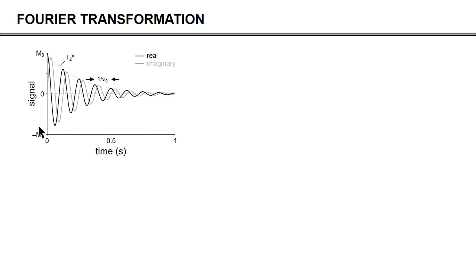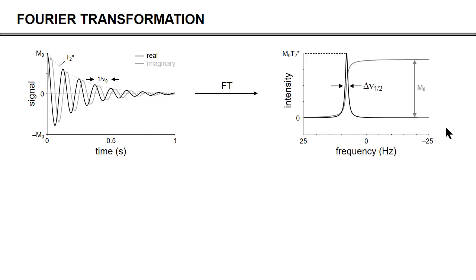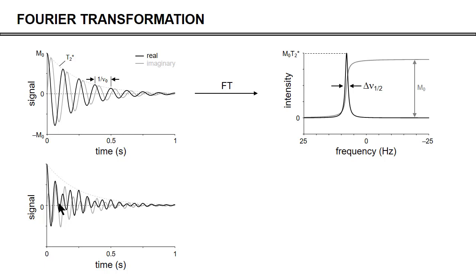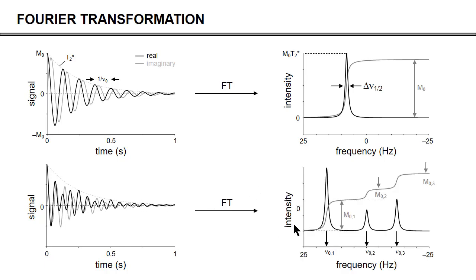The free induction decay is a time domain signal. We almost never look at it directly, because it is much easier to look at the NMR spectrum — especially when the signal contains several frequencies that are hard to distinguish in the time domain. After Fourier transformation, it is immediately obvious how many frequencies are present and at what relative amplitudes. The Fourier transformation is simply a tool to analyze which frequencies are in a time domain signal and plot them on a frequency axis.